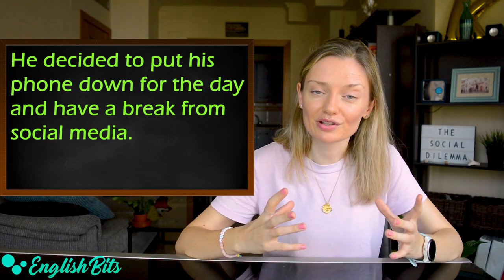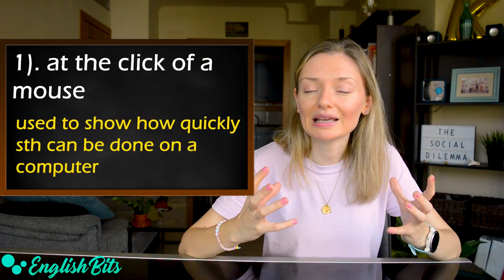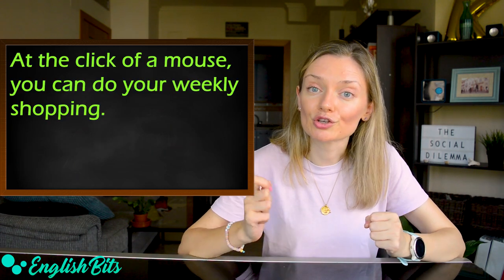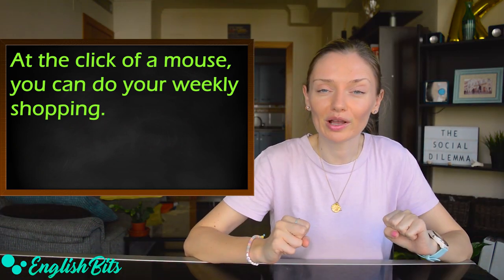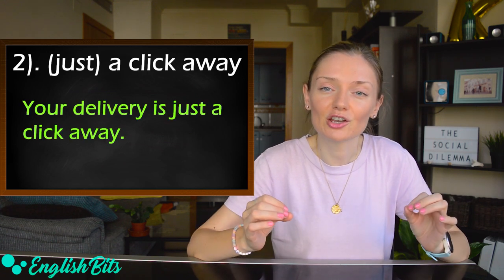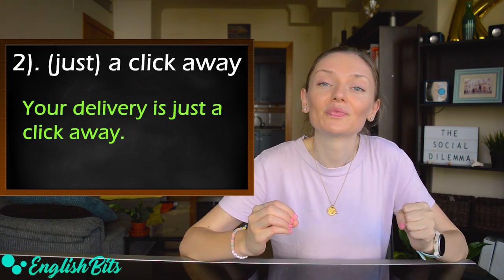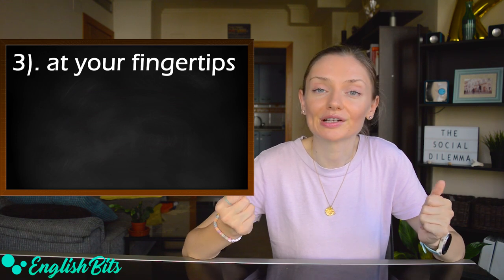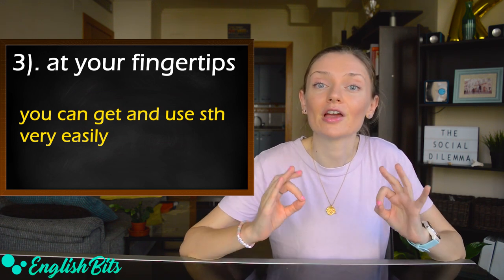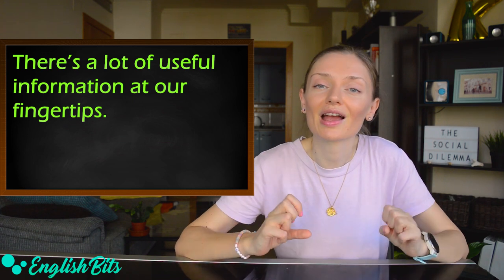And now let's move on to our expressions. Number one: at the click of a mouse. It's used to show how quickly something can be done on a computer. For example, at the click of a mouse, you can do your weekly shopping. Number two: we can also say just a click away. For example, your delivery is just a click away. And the third expression — I think it's super useful and I like it a lot — at your fingertips. It means that you can get and use something very easily. For example, there is a lot of useful information at our fingertips.